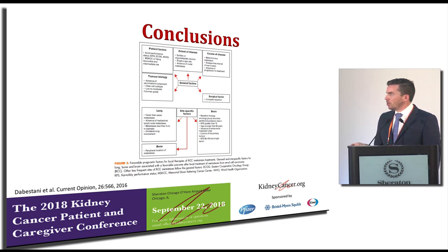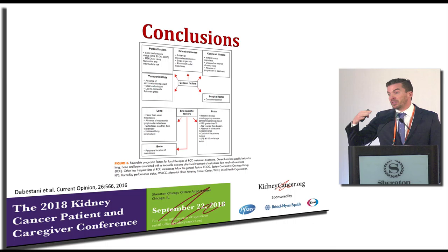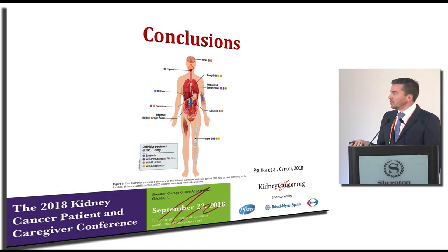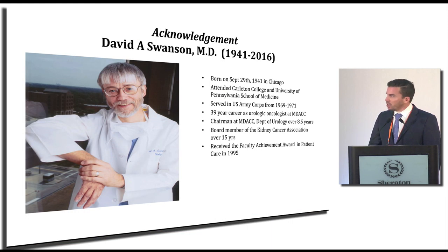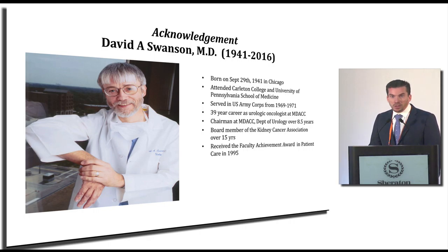There are many factors when considering aggressive surgery: patient factors, disease factors, likelihood of complications, and site-specific prognosis — lung, bone, and brain clearly have different outcomes. This summary slide covers treatments based on location. I'd like to mention Dr. Swanson, a mentor for many of us, who was part of the KCA for many years and dedicated much of his career to metastasectomy and the treatment of kidney cancer. His legacy is one we are all striving to build upon in making an impact on aggressive kidney cancer treatment. Thank you very much.